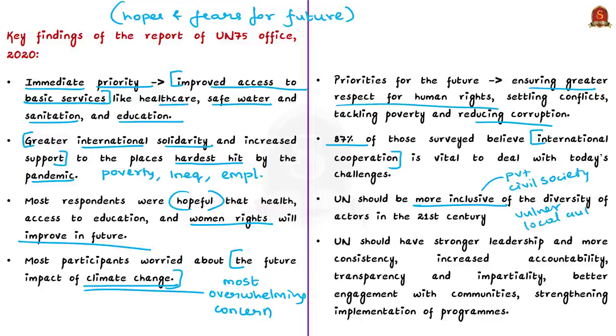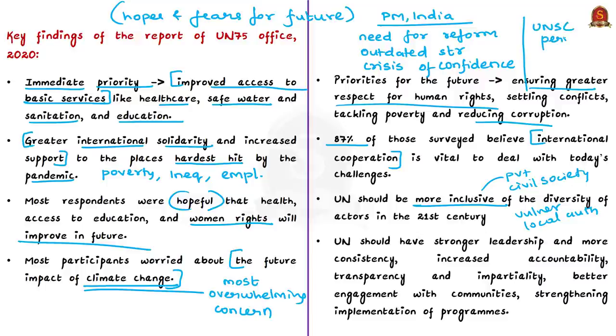In this regard, Indian Prime Minister in his message to commemorate the 75th anniversary stated that the declaration acknowledges the need for reform of the United Nations itself. Without comprehensive reforms, the UN faces a crisis of confidence. We know we have been pushing for reform at the level of permanent members of UN Security Council. India deserves a position at the UN Security Council as a permanent member. The statement is significant as India will occupy an elected non-permanent two-year term on UN Security Council from January 2021. Then the participants urged for United Nations to have strong leadership, more consistency, increased accountability, transparency and impartiality, better engagement and communication with communities, and strengthening implementation of programs and operations.